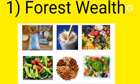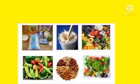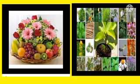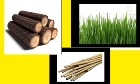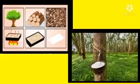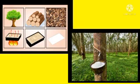Now we will see the first point, that is forest. We get food material from plants. We get flowers, fruits, and medicinal plants from plants. Similarly, we get wood, grass, bamboo, paper, and rubber from trees in the forest, so we must take care of them to get these things continuously.